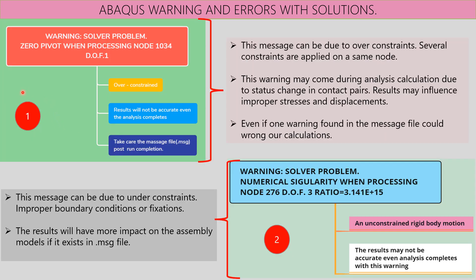I have listed around seven to eight warnings and errors which Abaqus will produce during structural simulations. Most likely every engineer will encounter these errors during analysis run time. We'll study them one by one along with possible solutions. The first one is: 'Zero pivot when processing node 1034 with degree of freedom 1.'